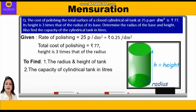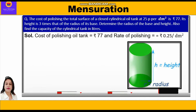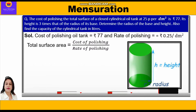The cost of polishing the oil tank is ₹77, and the rate of polishing is ₹0.25 per decimeter square. We know that rate × total surface area = total cost. So to find the total surface area, we divide the cost by the rate: 77 ÷ 0.25 = 308 decimeter square. So the total surface area is 308 dm².